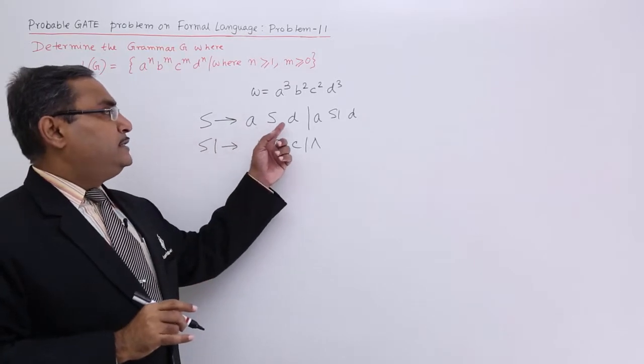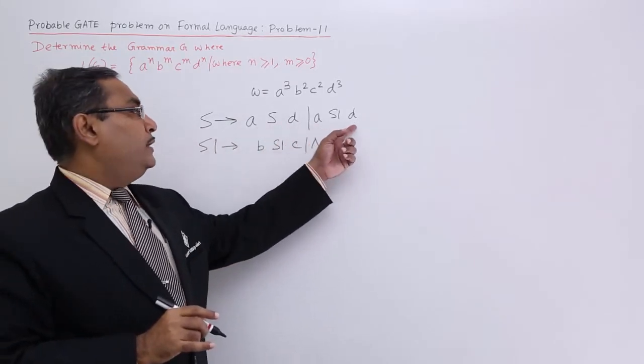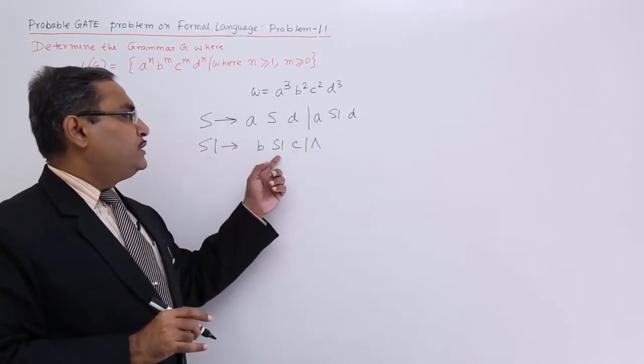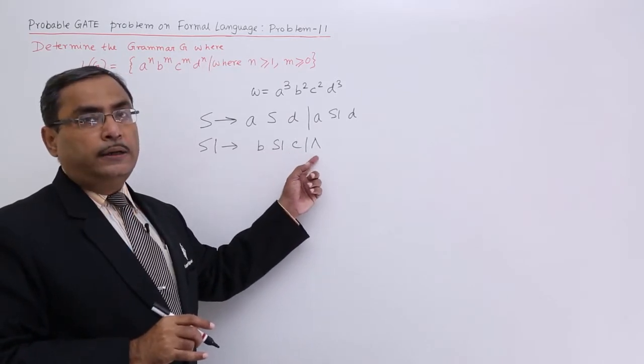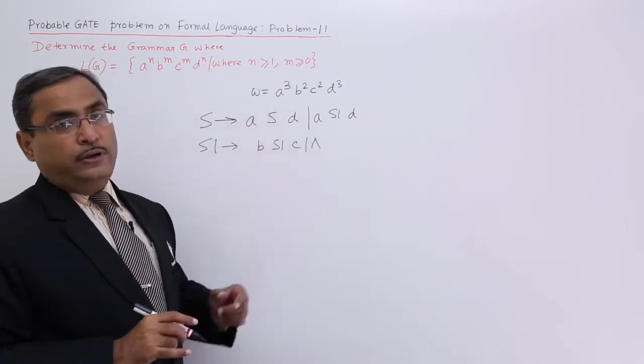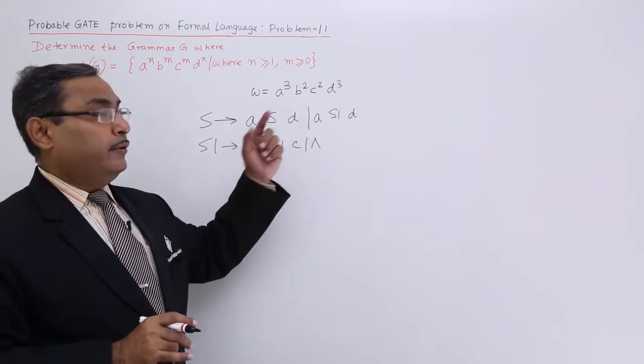You see S produces aSd or aS1d, S1 produces bS1c or epsilon. So in this way I can form this particular language. Let me show you.